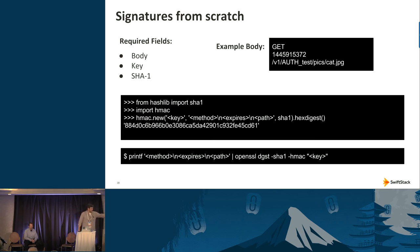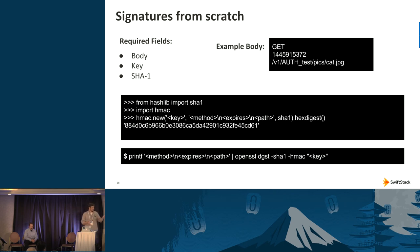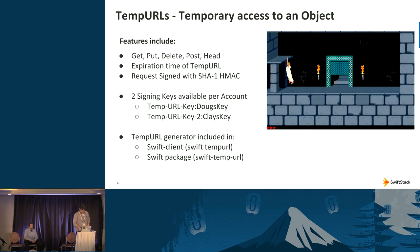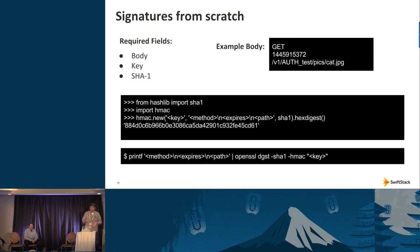The body of the HMAC includes the method, the full path including the version URL — important so that different Swift versions with different semantic meanings are correctly encoded — and the expiry time. On command line utilities you think in terms of 'expires after' (e.g., three hours), but the actual HMAC body requires 'expires at' as a Unix timestamp: `time.time()` plus however long you want. You sign that and you have your HMAC.